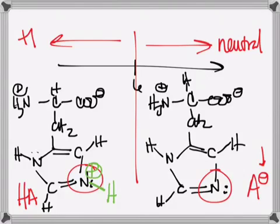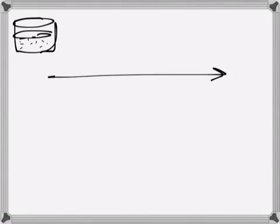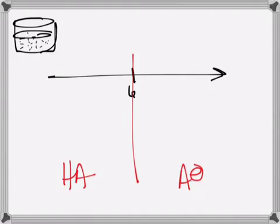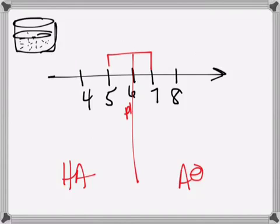Now let me show you another trick. Say you have a pool of histidines and you want to know what percentage are protonated or deprotonated at a given pH — just ignoring the NH3 and COO groups for now. When you're one pH unit away from the pKa of 6, you're going to have a 90% to 10% ratio, always. When you're two away from the pKa, it's going to be a 99% to 1% ratio, always.